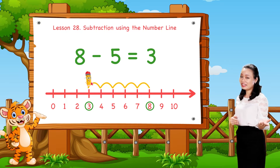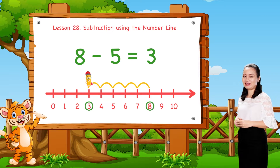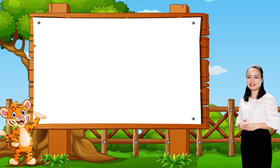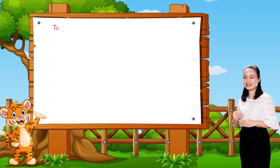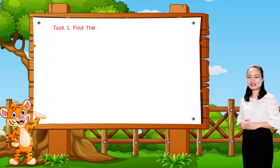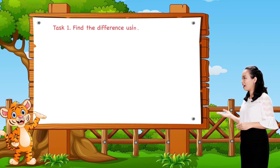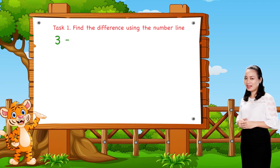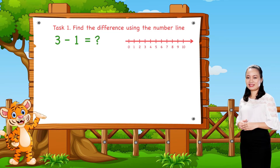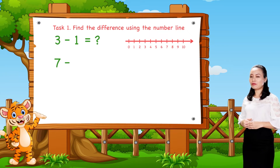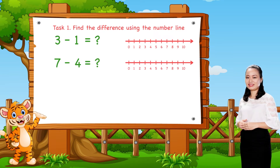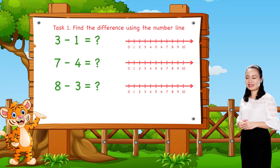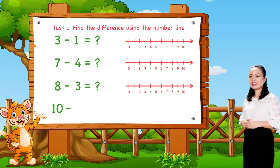8 minus 5 equals 3. It's simple, right? Now, let's get some practice. Task 1: Find the difference using the number line. 3 minus 1. 7 minus 4. 8 minus 3. 10 minus 6.